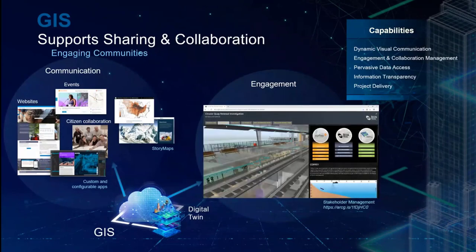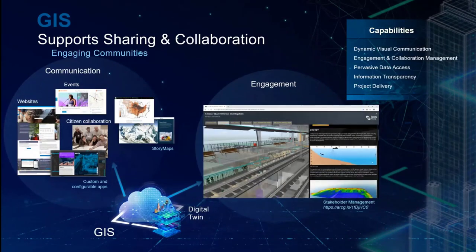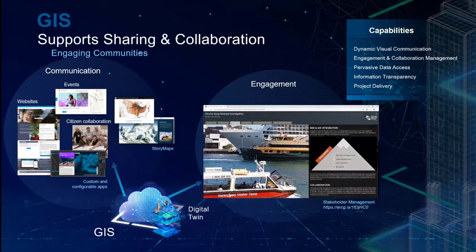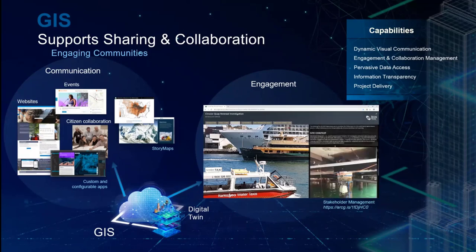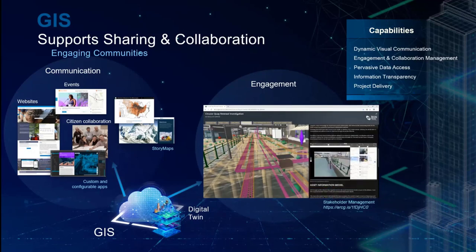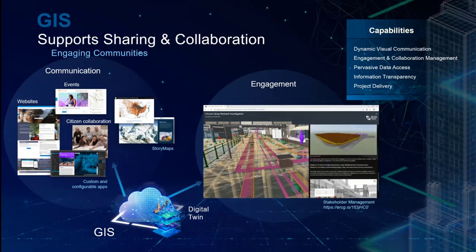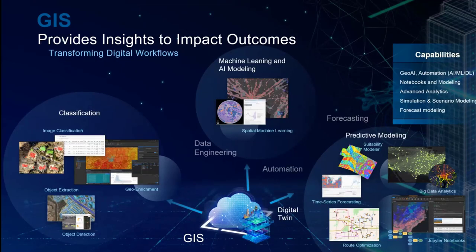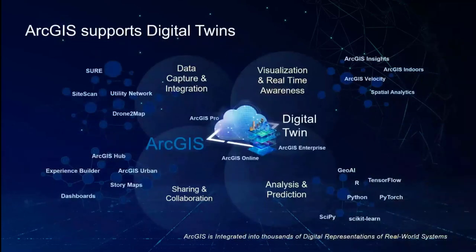GIS supports sharing and collaboration — everything from story maps to dashboards — allowing customers to communicate outward the benefits from expensive IT implementations, including digital twin implementations. And there is a tremendous amount of potential to use GIS and location to transform analysis workflows across very large systems and organizations.